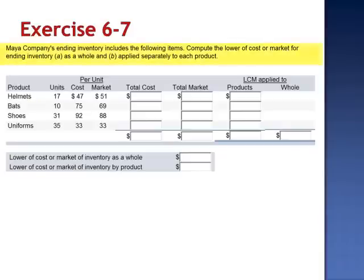Exercise 7. Maya Company's ending inventory includes the following items. Compute the lower of cost or market for ending inventory: A, as a whole, and B, applied separately to each product.